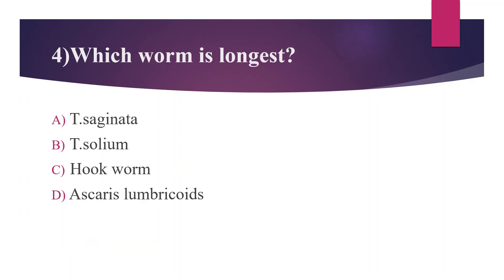Fourth question: Which worm is the longest? Option A. Taenia saginata, option B. Taenia solium, option C. Hookworm, option D. Ascaris lumbricoides. The answer is Taenia saginata — most of us choose Ascaris, but Taenia saginata is 5 to 10 meters in length. Taenia solium is 2 to 3 meters, Ascaris is 20 to 30 centimeters, and hookworm is 12 centimeters.